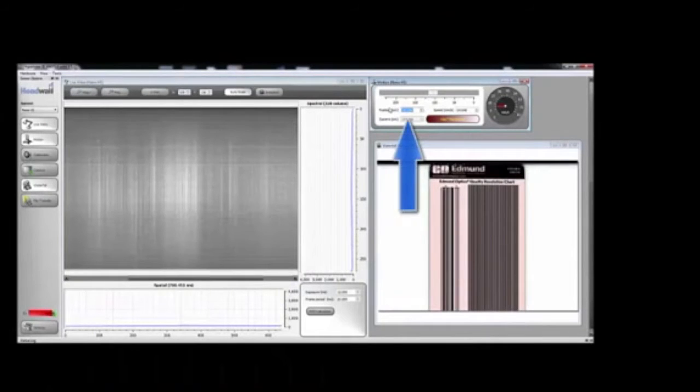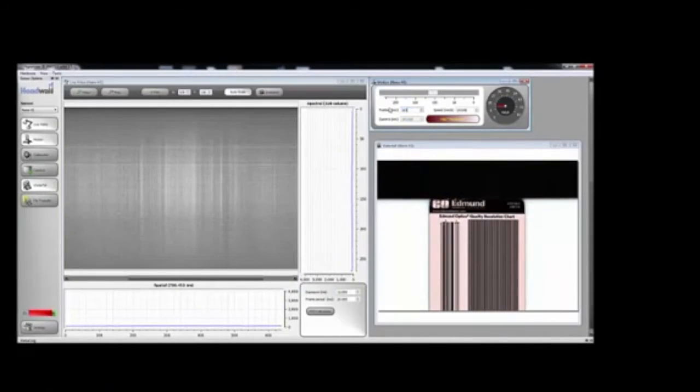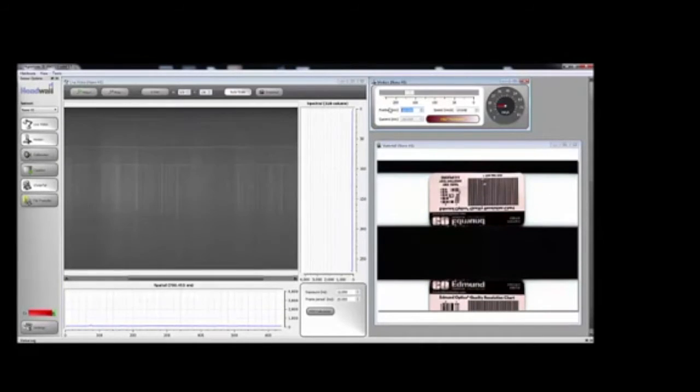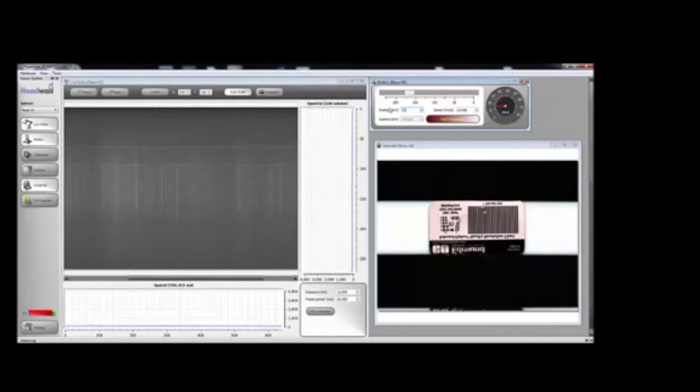Using a linear stage, setting the beginning and end points allows the target to travel beneath the lens so that we can focus. These same points will be used to create the data cube.